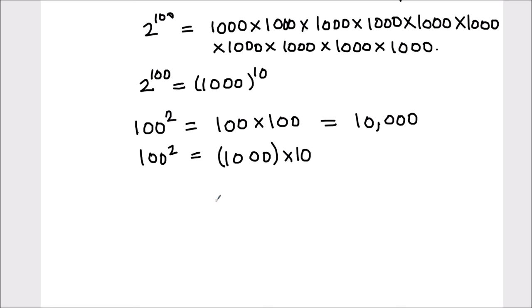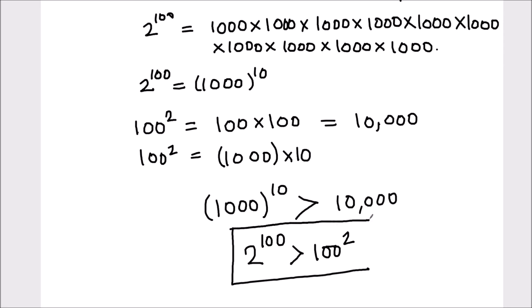So we can see that 2 raised to power 100 is 1000 raised to power 10, which is far greater than 10,000. Our final conclusion: 2 raised to power 100 is greater than 100 square. This is the final answer. So out of the two numbers, 2 raised to power 100 is far greater than 100 square.